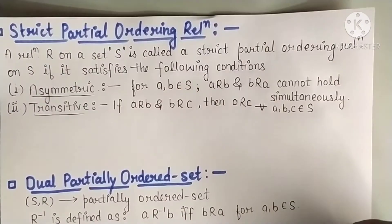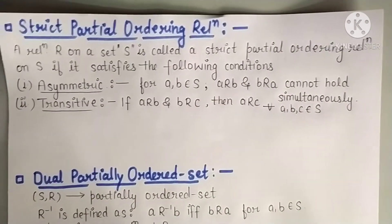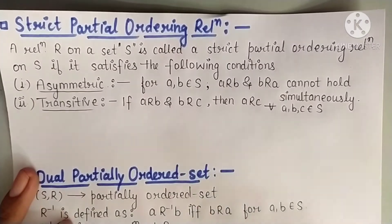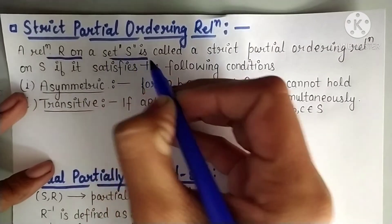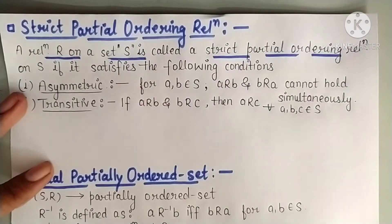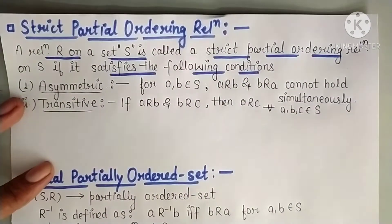So today we are going to start strict partial ordering relation. We started partial ordering relation, and today we will learn what is a strict partial ordering relation. A relation R on a set S is called a strict partial ordering relation on set S if it satisfies the following conditions.